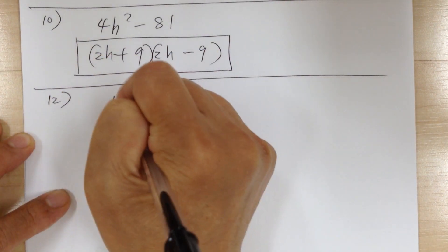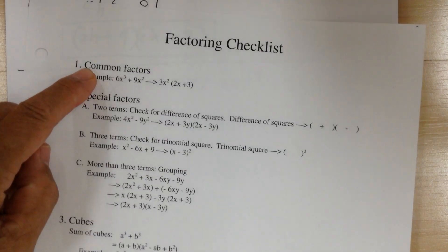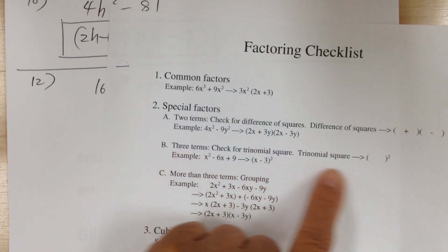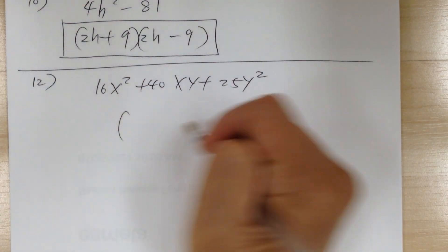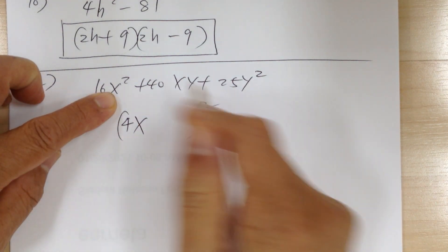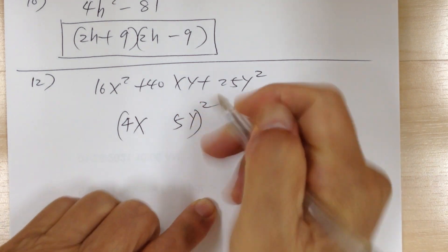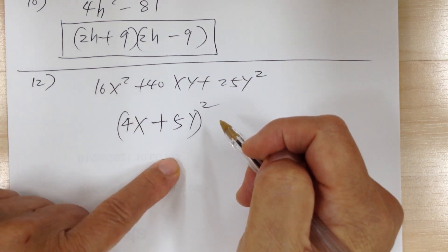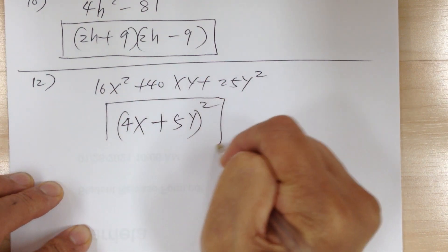Next: 16x² + 40xy + 25y². Step 1, common factor — nothing. Step 2: three terms, so check for perfect square. The first and last are perfect squares. To get 16, you need 4²; to get x², you need x. To get 25, you need 5; to get y², you need y. In the middle, match the sign: 2 × 5 × 4 = 40, and the variables are x and y. Everything matches, so 16x² + 40xy + 25y² = (4x + 5y)².